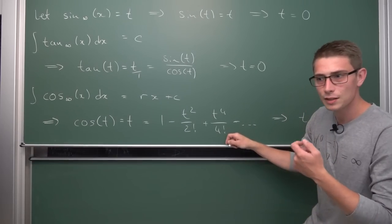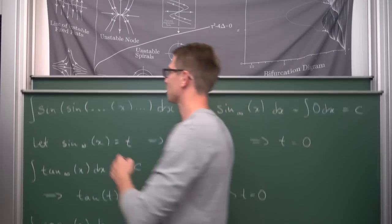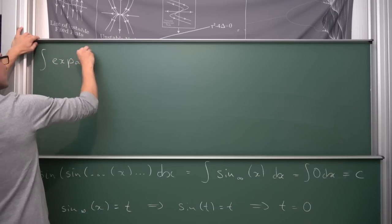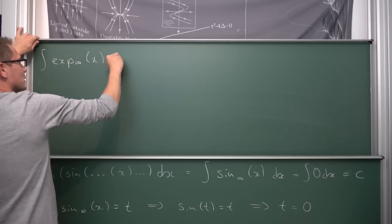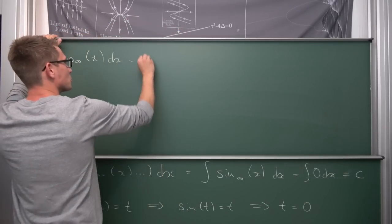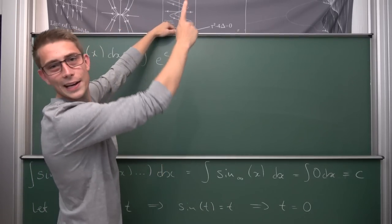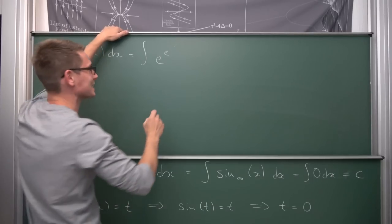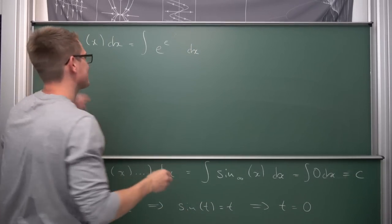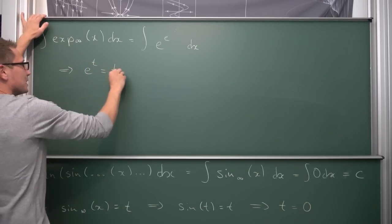Next up is the exponential function. What about the infinitely nested exponential? So the integral of exp-infinity of x with respect to x. Written out, this is like a power tower e to the e to the e blah blah blah, with x somewhere at infinity. Once again, it needs to satisfy the equation e to the t equals t.